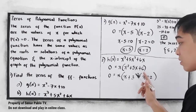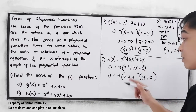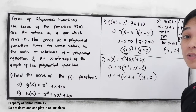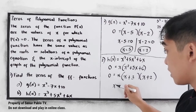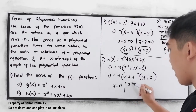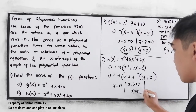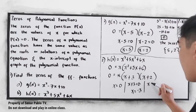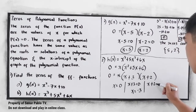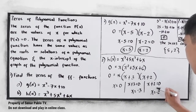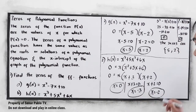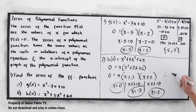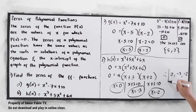The product must be 6: 3 times 2 is 6. The sum must be positive 5: 3 plus 2 is 5. Now solve for the values of x. Setting each factor to 0: x is equal to 0; x plus 3 equals 0, so x is equal to negative 3; and x plus 2 equals 0, so x is equal to negative 2. Therefore, the zeros are 0, negative 3, and negative 2.